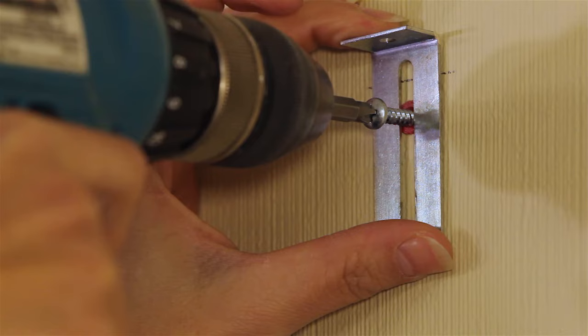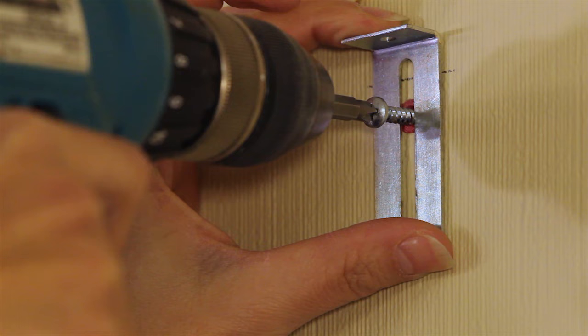Position the top mounting clips with the longer tab down and the top of the clip slightly above the marks on the wall. This will allow for the board to be lifted and set in place. They will be tapped down into place later.